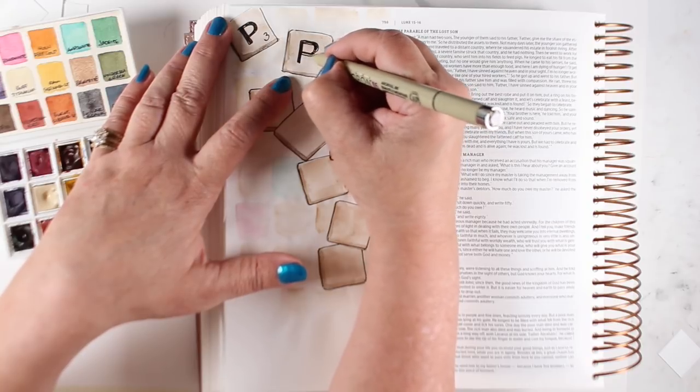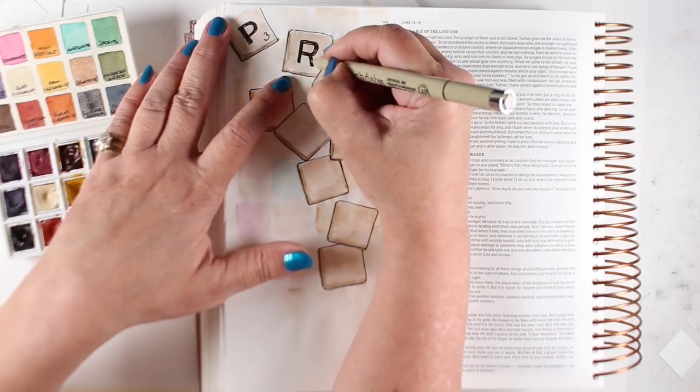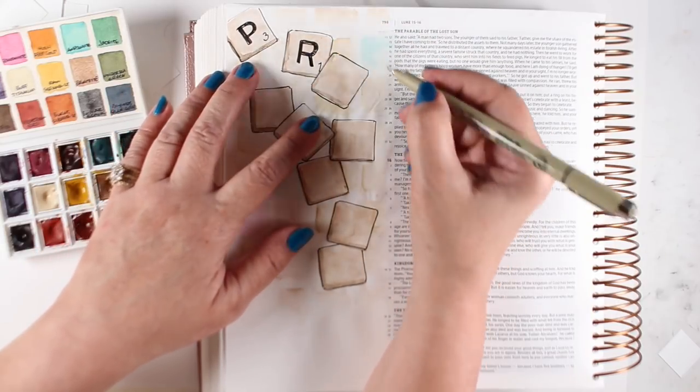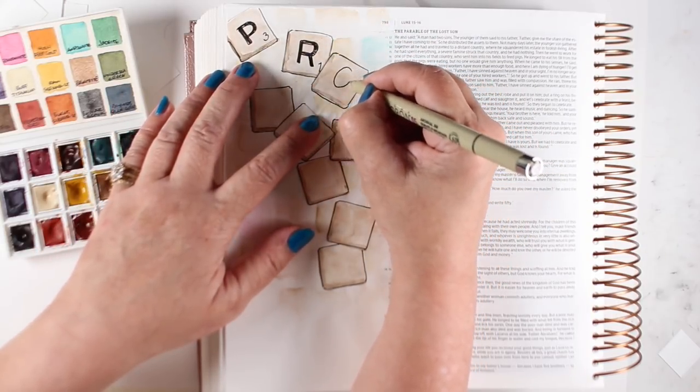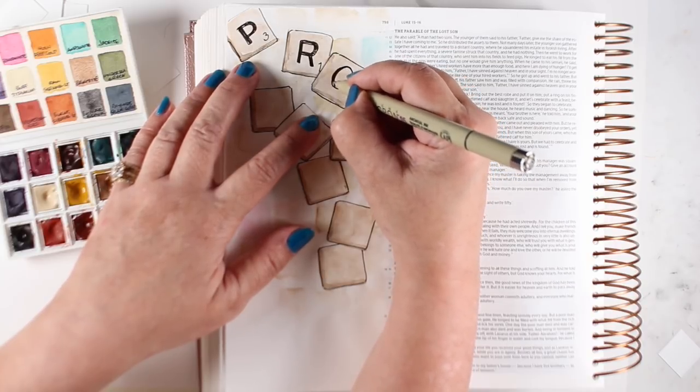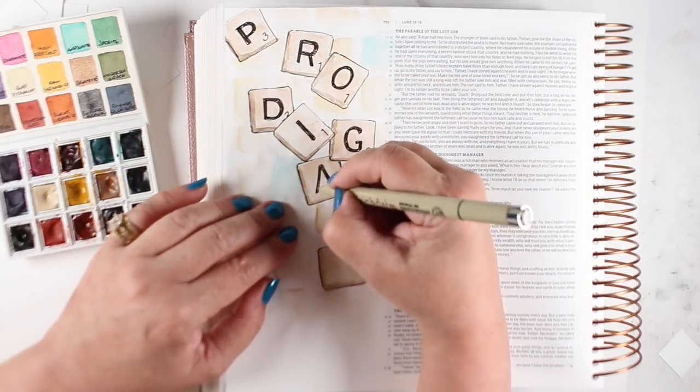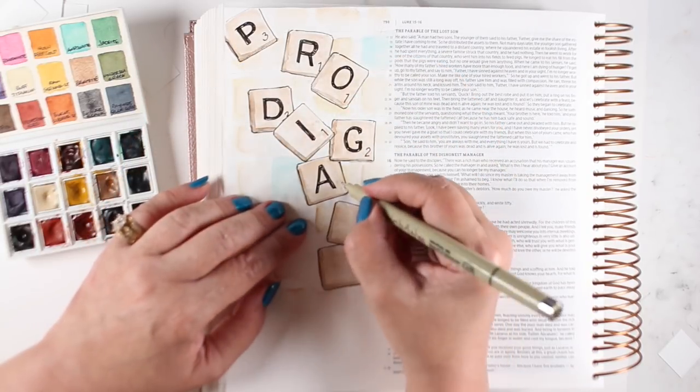Now for each one of the letters, like I said, I looked up online to find out what the points were for each one. And I'm making a kind of thick letter using my micron pen to do it. There are thicker pens than this, but I'm just going over it a couple of times to make a thicker type of letter and then adding the numbers down below in each one of them.